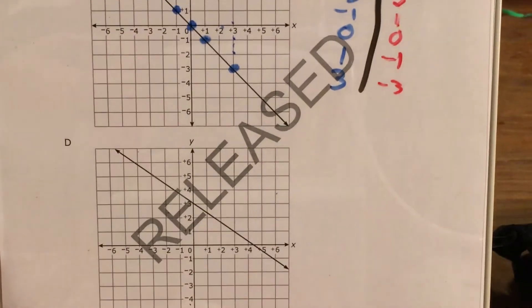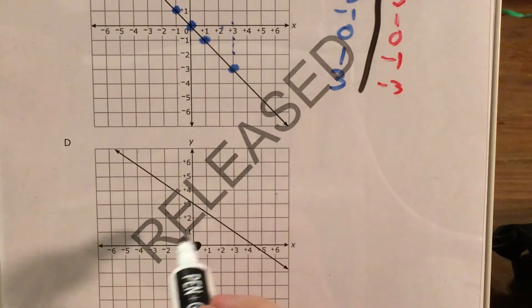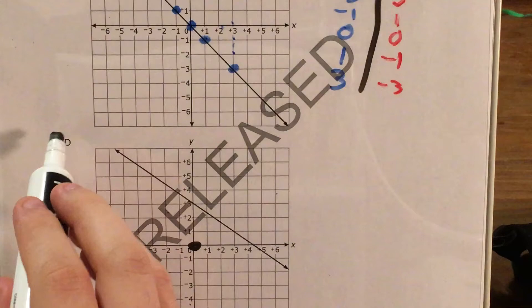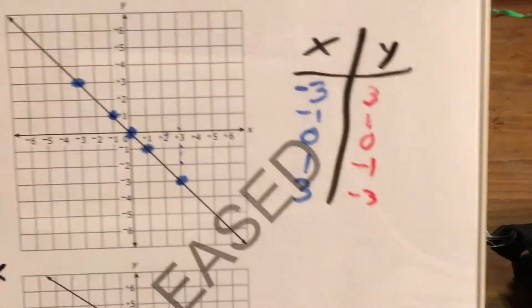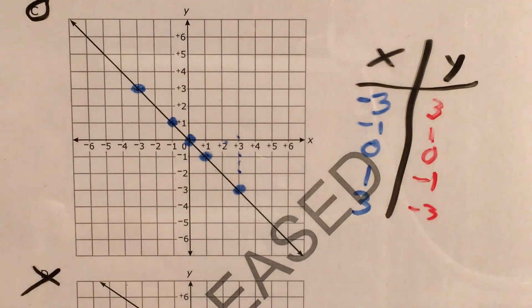So choice D. Once again, unfortunately, even testing out 0, 0, the easiest point to test and find isn't on the line. 0, 0 is not on the line. Therefore, it can't be choice D. So our only answer left is the answer where all of our points ended up on this line, and that's choice C. I'll see you next time.